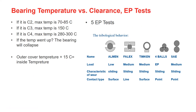Bearing temperature versus clearance. The bearing manufacturer considers a calculated clearance in their bearing design to make sure that thermal expansion will not damage the bearing while it's working. As a rule of thumb, if the bearing temperature is 70 to 85°C, we need a C2 clearance bearing. If the bearing temperature is up to 250°C, we need a C3 clearance bearing. And if the bearing temperature is up to 300°C, we need a C4 clearance bearing.